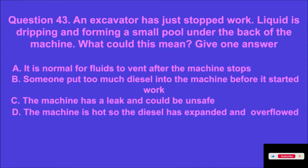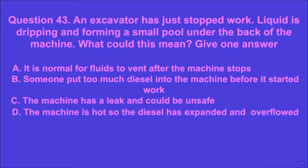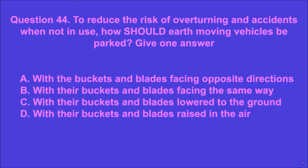Question 43: An excavator has just stopped work and liquid is dripping, forming a small pool under the back of the machine. What could this mean? Give one answer. A: it is normal for fluids to vent after the machine stops, B: someone put too much diesel in before it started, C: the machine has a leak and could be unsafe, D: the diesel has expanded and overflowed due to heat. C is the correct answer.